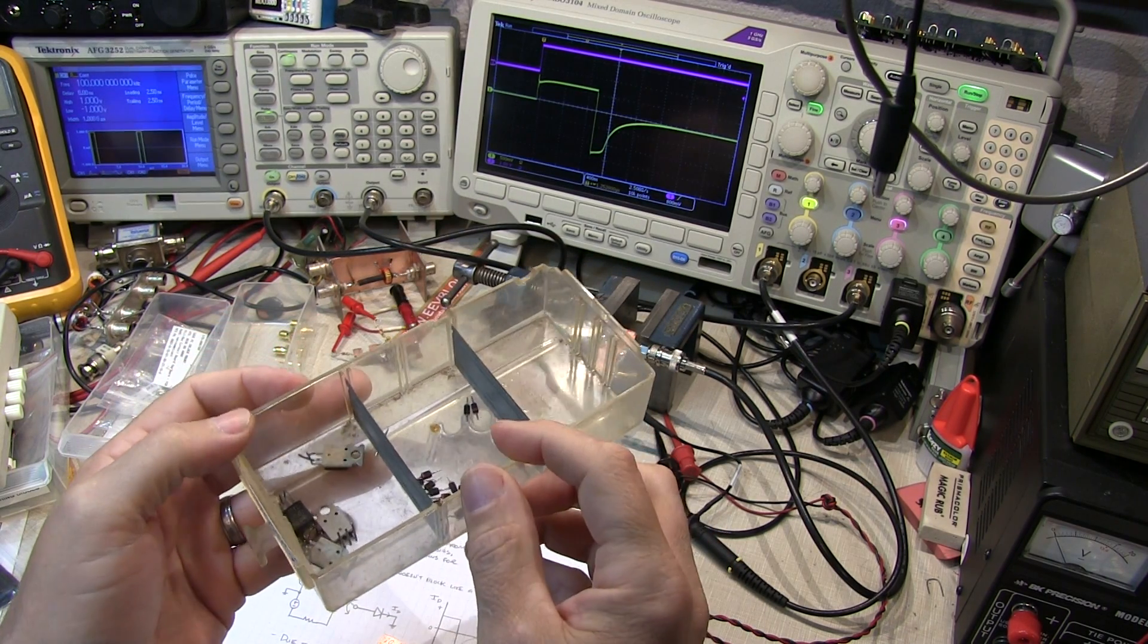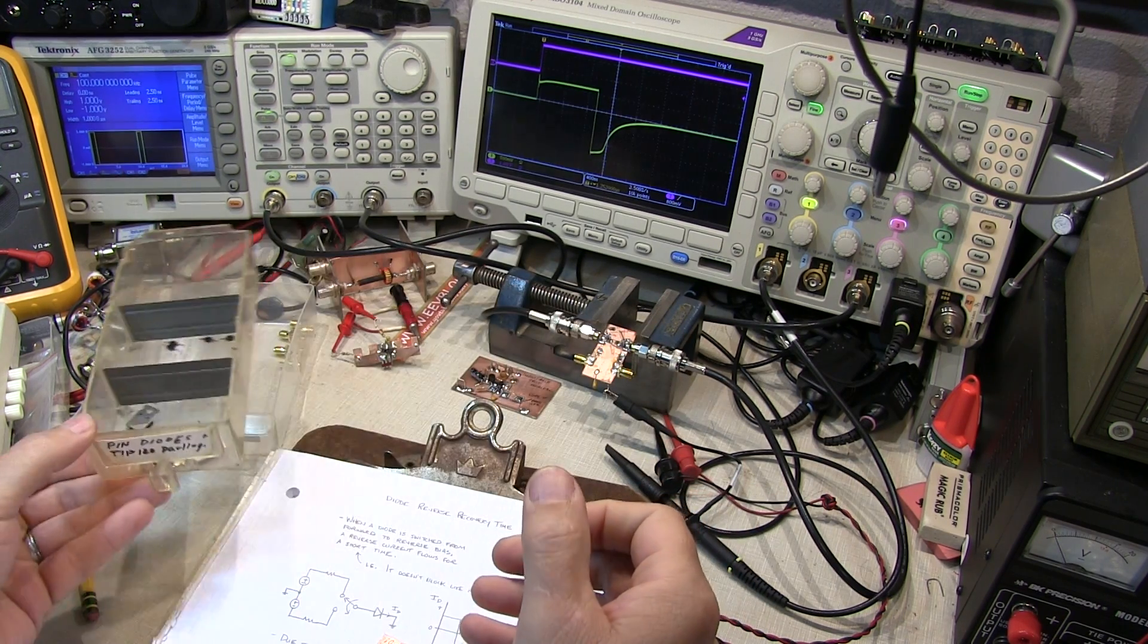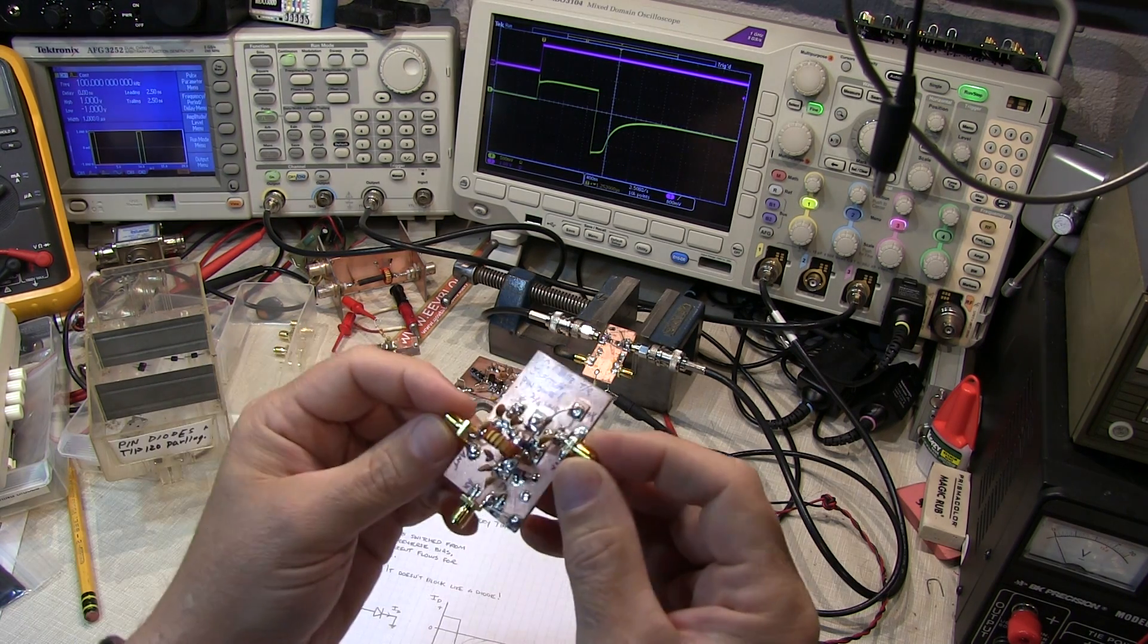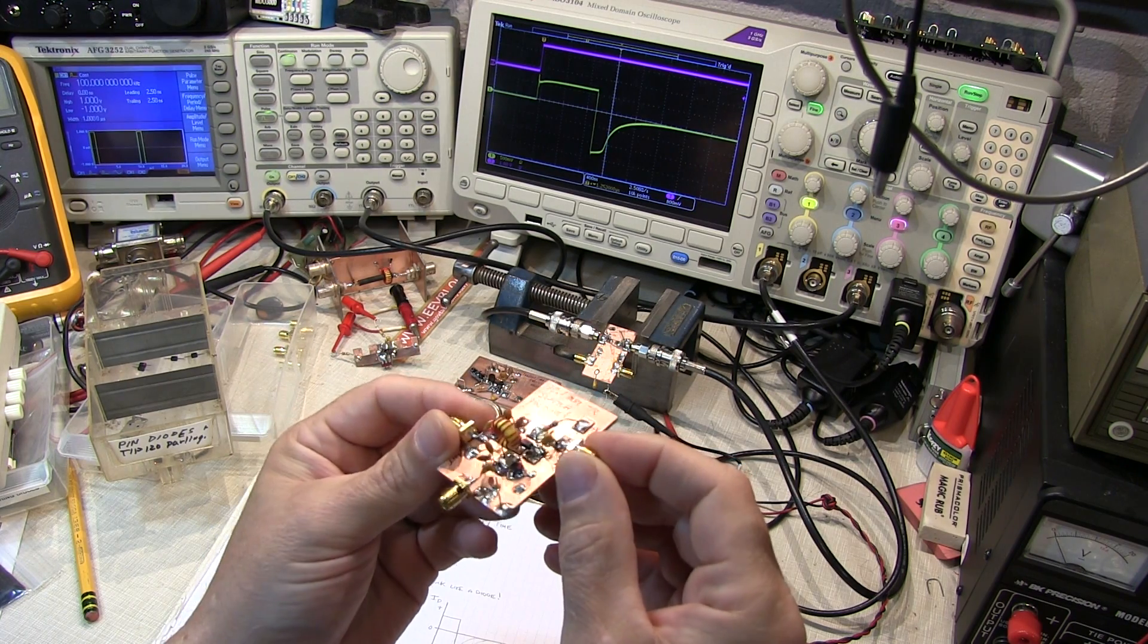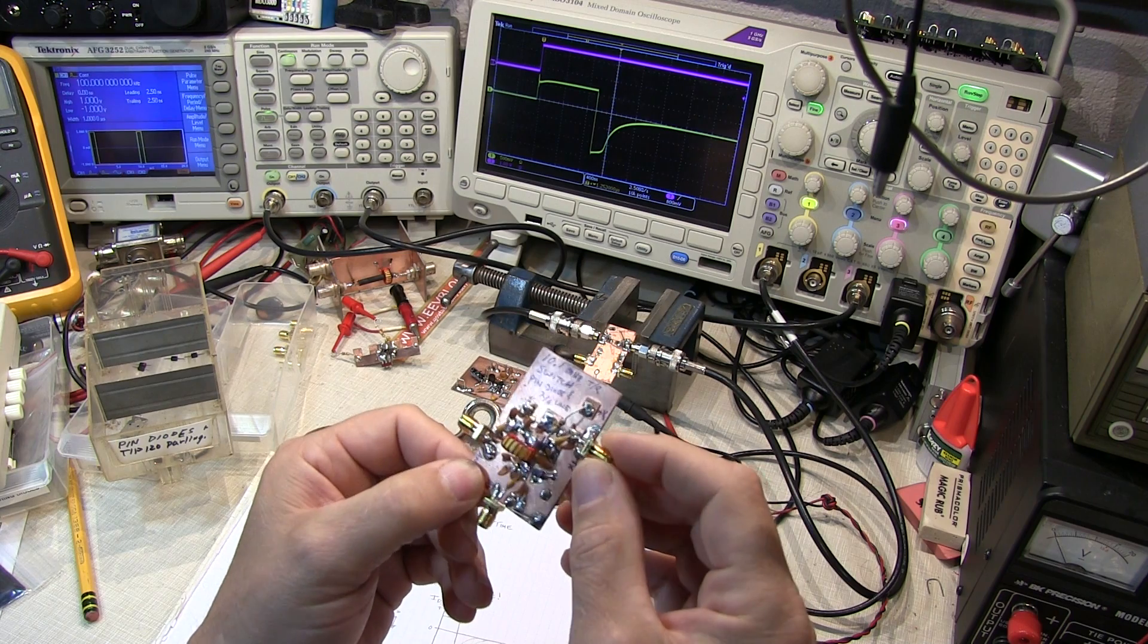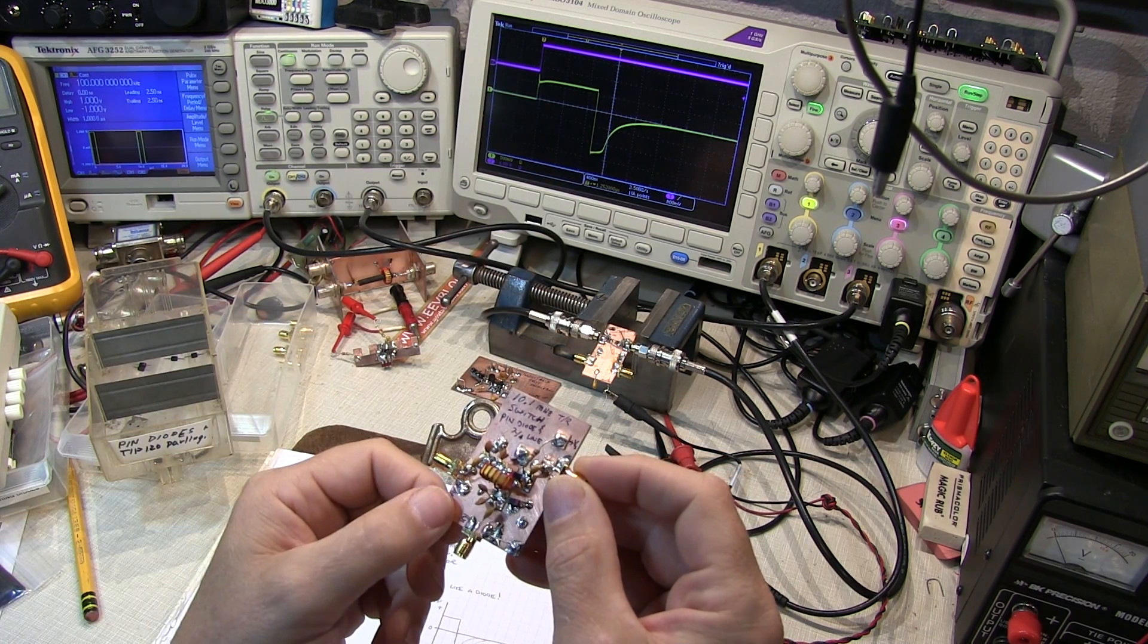No markings on the components, so I wanted to verify that they were indeed pin diodes. A way to do that is to take a look at the device capacitance as well as the reverse recovery time. So I thought maybe a video on diode reverse recovery time would be a good one to do. That's what we're going to talk about today, the reverse recovery characteristics of diodes.